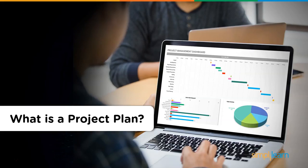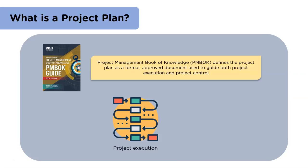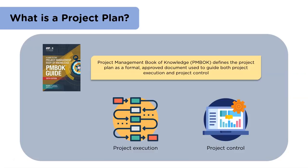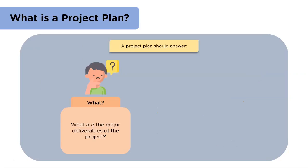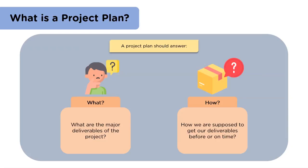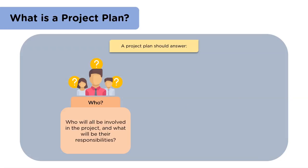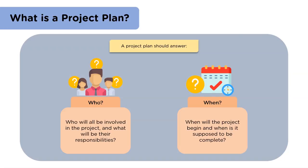Let's see what is a project plan. A project plan is a basic thing that is needed to execute a project. According to the Project Management Book of Knowledge, a project can be defined as an approved, elaborative document that guides the team during project execution and project control. When making a project plan, it must answer several questions: What are we expecting our project to deliver? How are we expecting to get our deliverables within the desired time? Who all will be a part of our project and what tasks they will have? When will the project start and when is it expected to end — that is, the deadlines of the project.